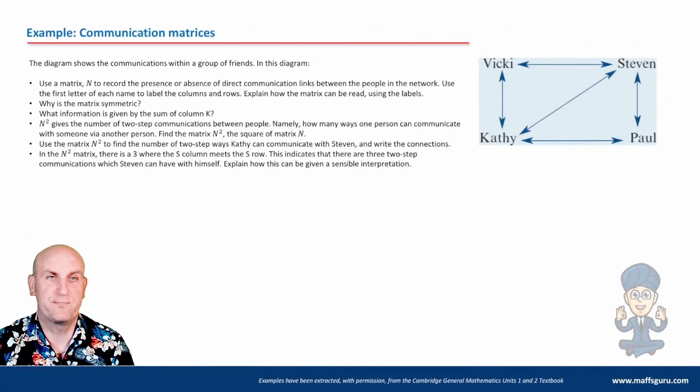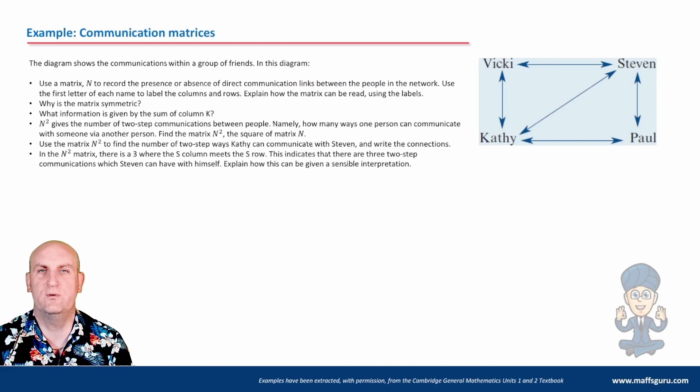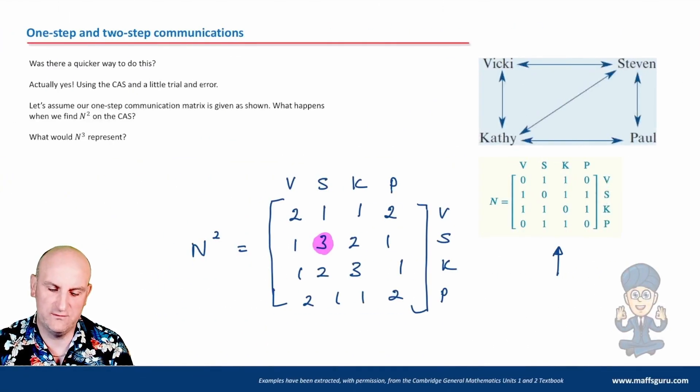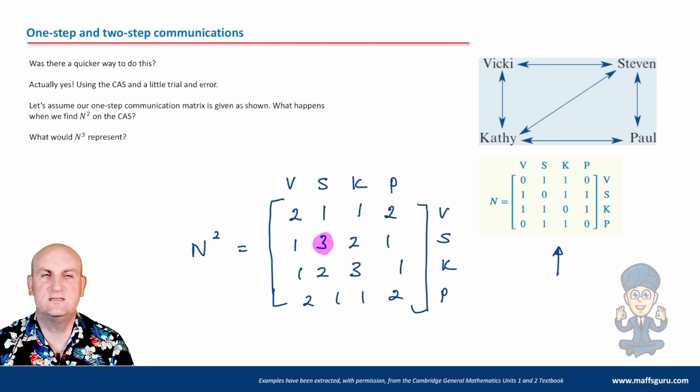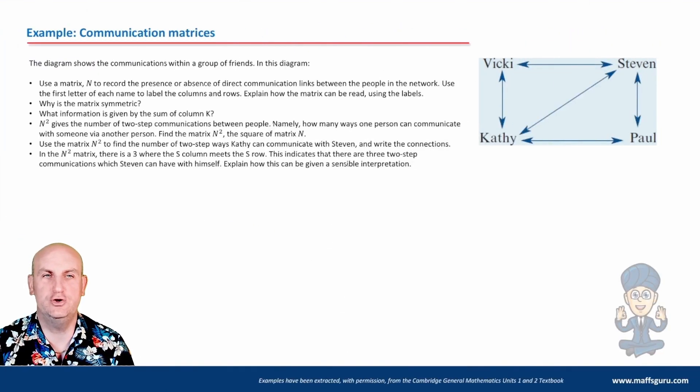N squared gives the number of two-step communications between people, namely how many ways one person can communicate with someone via another person. Find the matrix N squared. We already did that. Use it to find the number of two-step ways Kathy can communicate with Stephen. So the two-step ways that Kathy can communicate with Stephen, you're looking for the overlap. And in that situation, I'd give my answer as two.